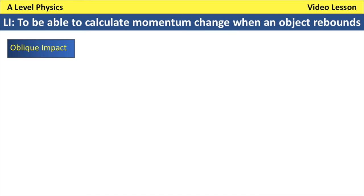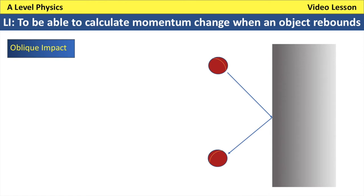Now let's consider a more realistic example. It's not often that a ball rebounds exactly along the same line in one dimension. Quite often collisions are in two dimensions — the ball is thrown at the wall and moves away at an angle. The initial velocity is positive plus u, and there's no loss of speed when the ball hits the wall. I've drawn a normal line at 90 degrees to the wall, and labelled the angle between the velocity vector and that normal line as angle theta.